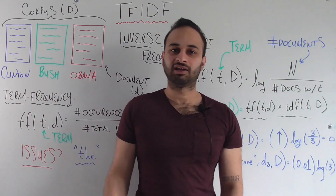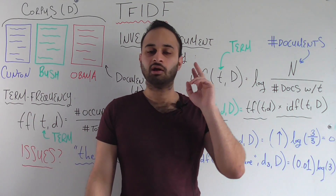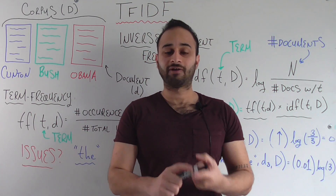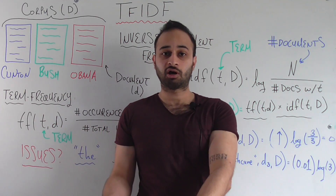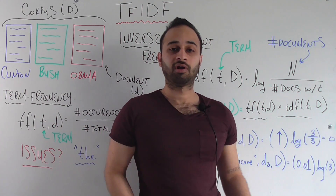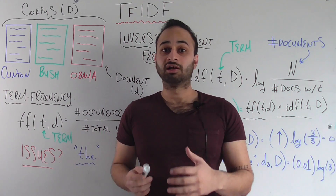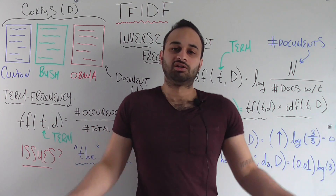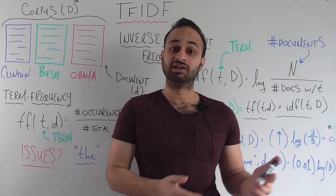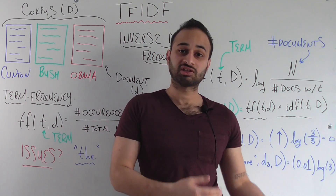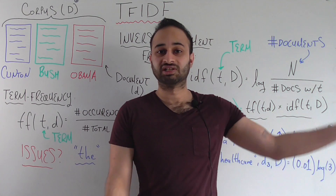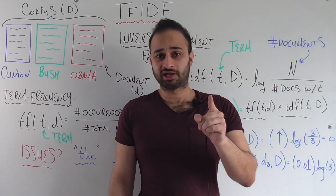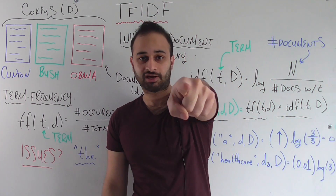So again, in a nutshell, TF-IDF is a combination of two measures: the first is how often a term occurs in a document, and the other is how rare that word is across all documents. Just something you might use for your text-related data science projects. If you have any questions, please leave them in the comments below. Please like and subscribe for more videos just like this, and I will see you next time.